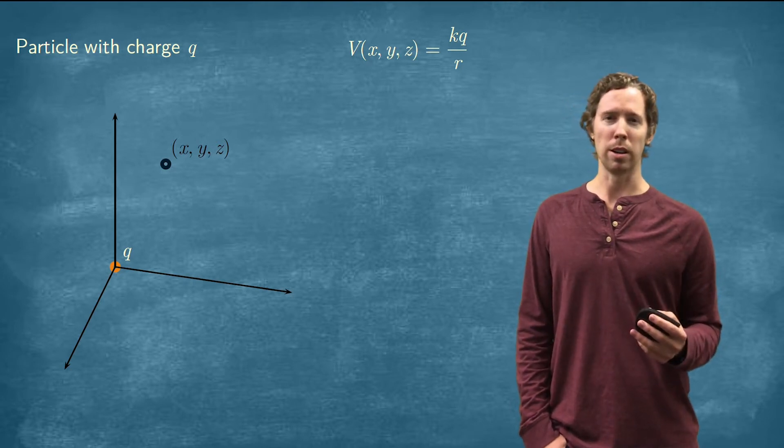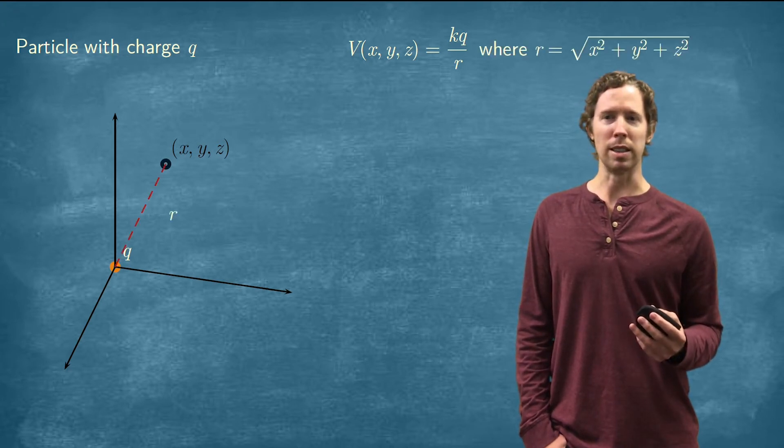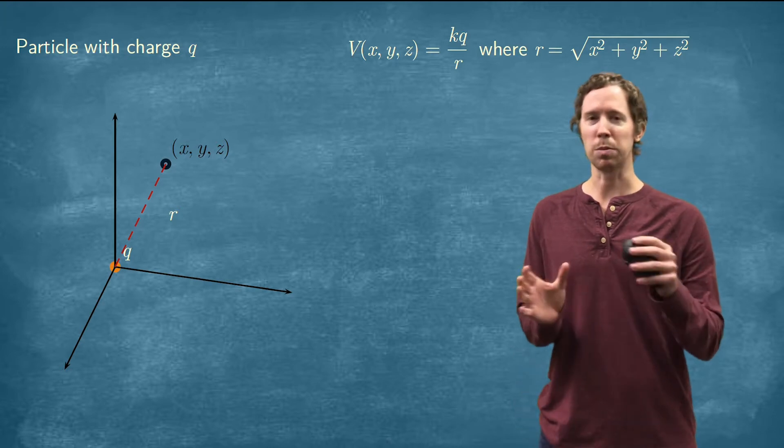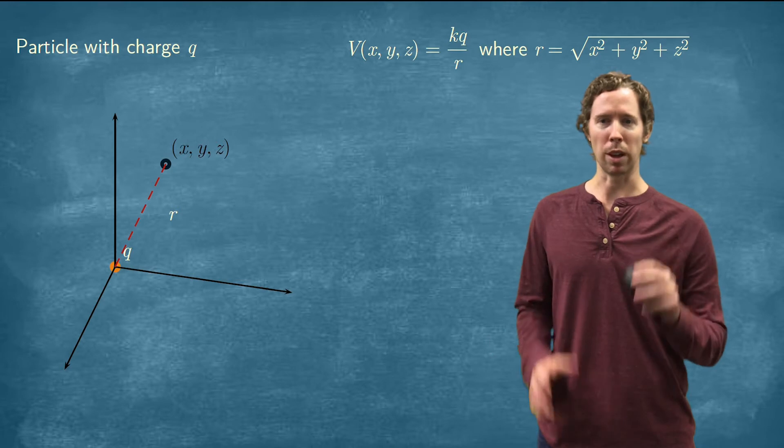It's K times Q over R, where K is just this nice constant that's known and R is the distance between the two points. So the distance between the charge and this point that we're looking at.